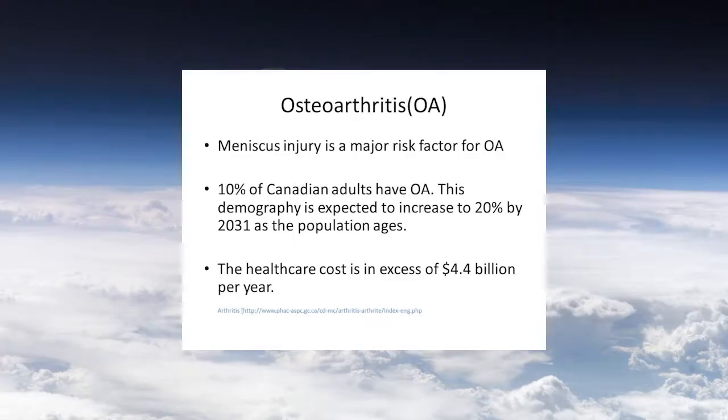So let's go to the background information. Osteoarthritis — meniscus injury is a major risk factor for osteoarthritis. About 10% of Canadian elders have OA, and this demographic is expected to increase to 20% by 2031 as the population ages. Each year, the healthcare cost for OA is in excess of $45 billion.